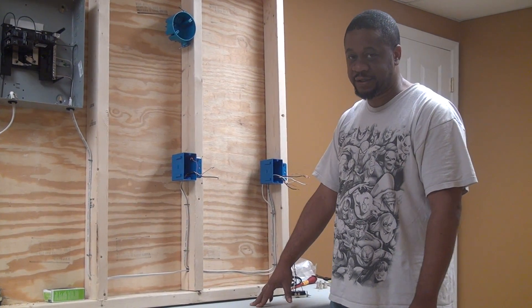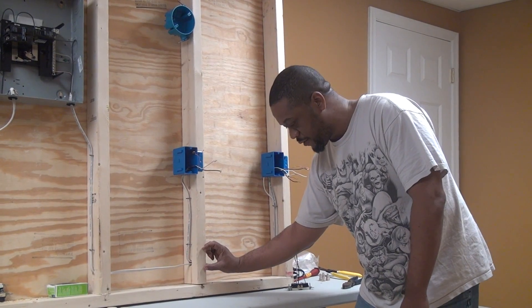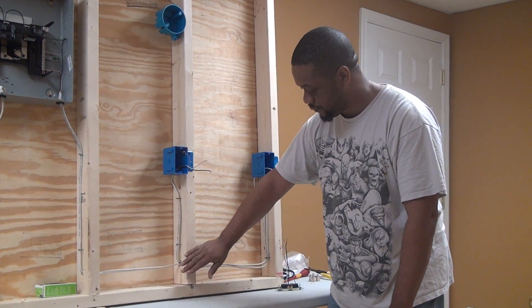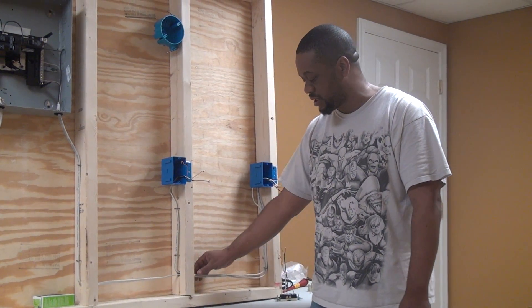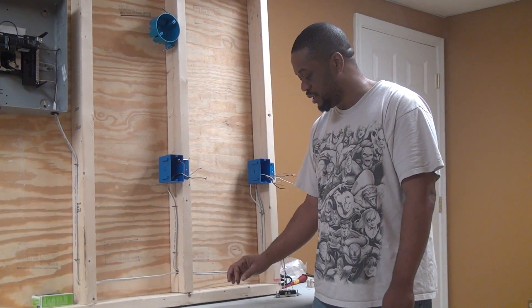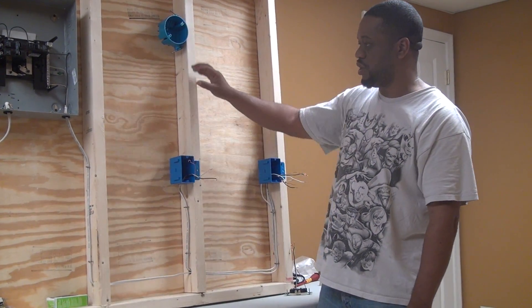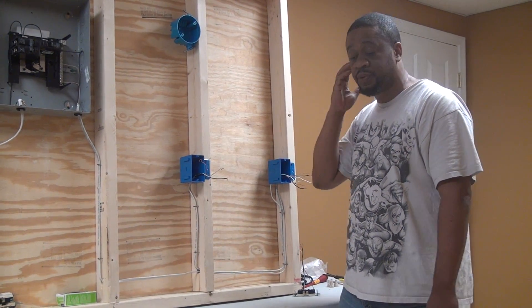Unfortunately, I don't have any nail plates here to show you guys, but it's just a little metal plate that you put in front of the hole that you drilled on the front of the stud and you hammer it into the stud there. It protects the cable from any screws or nails that you put in once you put up your sheet rock or whatever covering you're going to put on your wall.